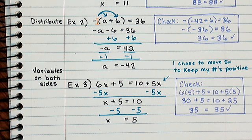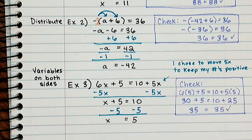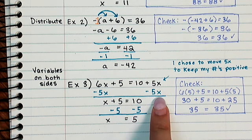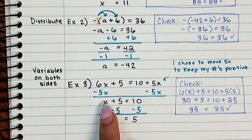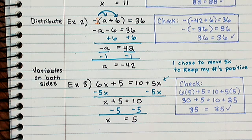So I always like to choose the one that'll make my numbers a little bit nicer, and I think that positive numbers are nicer to work with than negative, because we're so used to them. So I chose to move 5x to keep my numbers positive. So I undid the positive 5x with a negative, and that left me with x plus 5 equals 10. Then all I had to do was subtract 5 from both sides, and I got x equals 5.